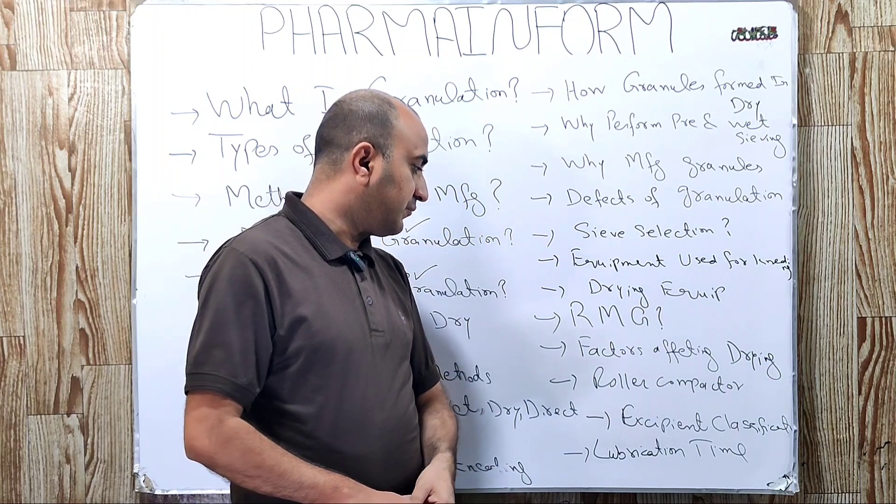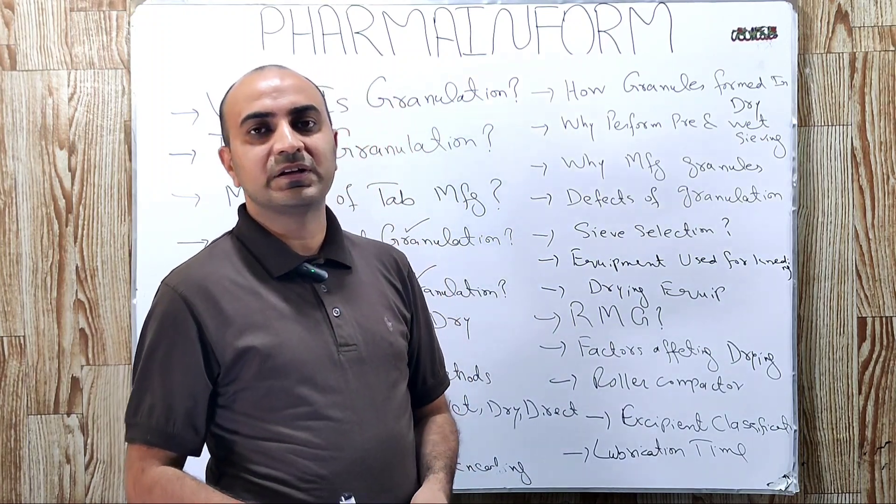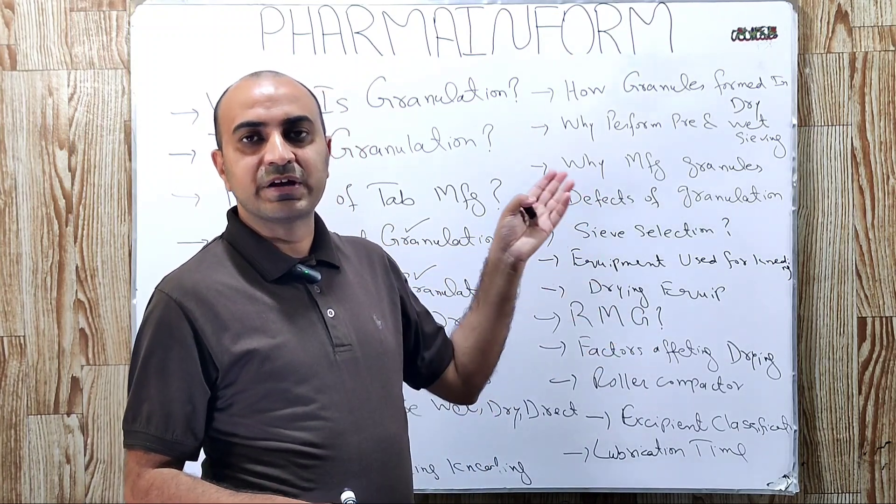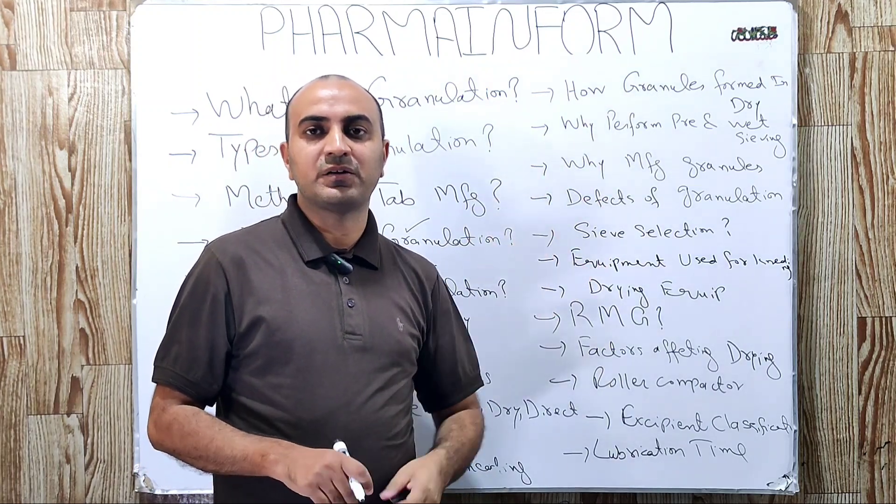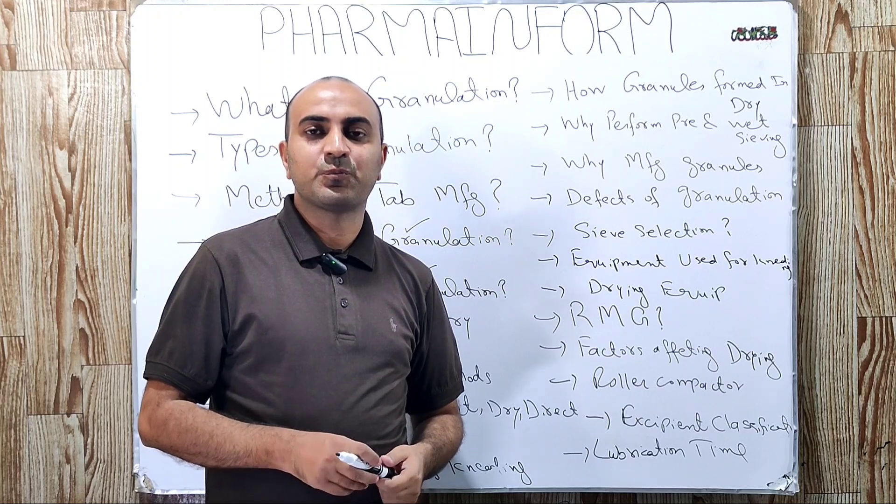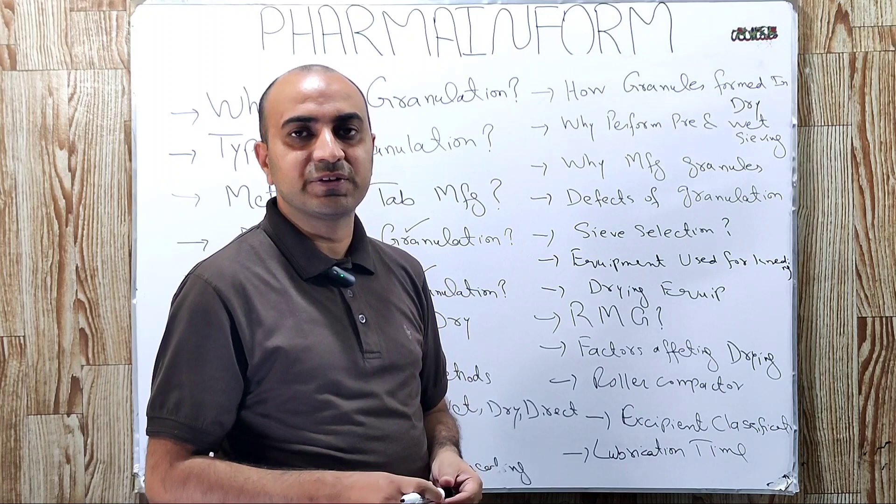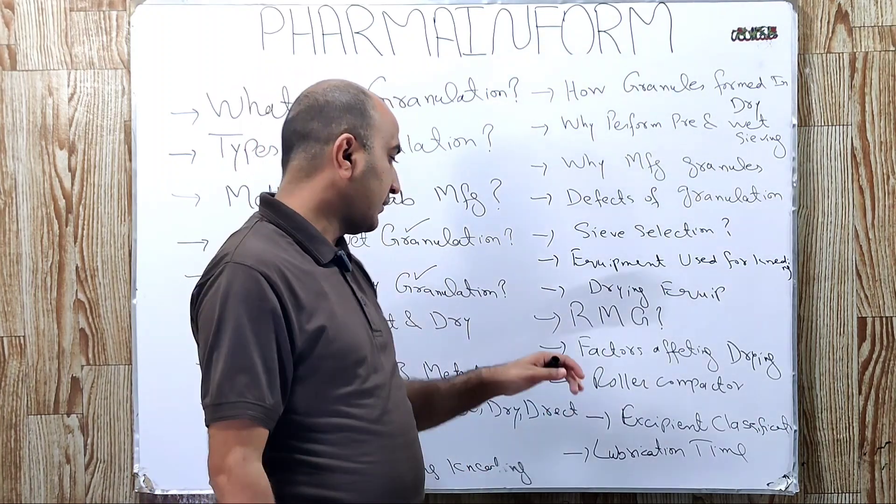Next one is what is roller compactor? Roller compactor is basically an equipment which is used for dry granulation, which has two rollers which rotates and powder passes through between these two rollers and by application of pressure, the powder is converted into powder sheets and these sheets are then broken down to convert into granules.